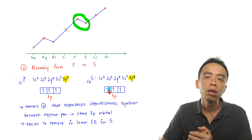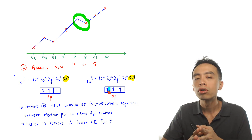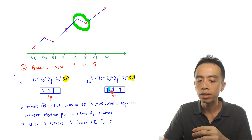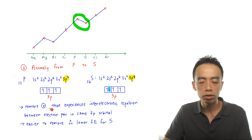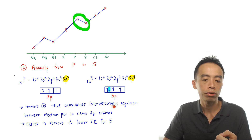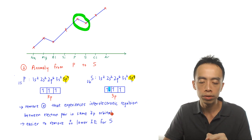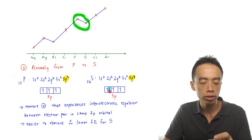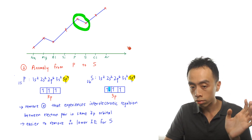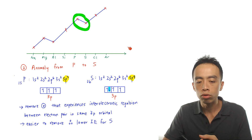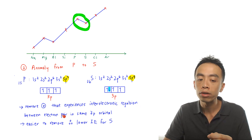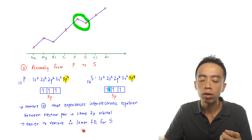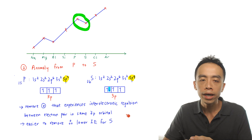It is easier to remove this specific electron in sulfur because it is sharing its orbital with another electron. That other electron repels it, since both are negatively charged and sharing the same orbital — there is inter-electronic repulsion between the electron pair inside the same 3p orbital. This additional repulsion makes it easier to remove the spin-down electron. Therefore, because of inter-electronic repulsion between the electron pair inside the same 3p orbital, sulfur has a lower first ionization energy compared to phosphorus.